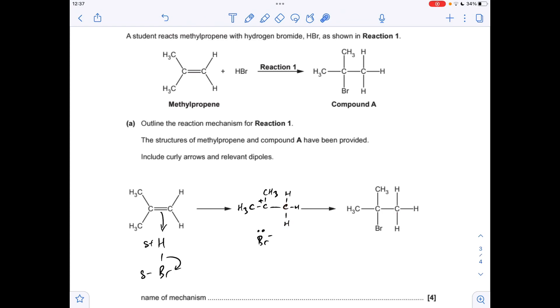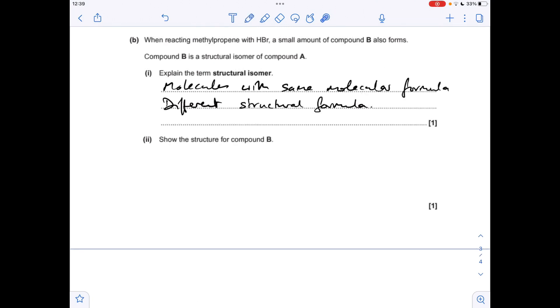So the Br becomes Br minus. To finish the mechanism off, we just need to take a pair of electrons from that lone pair on the Br minus to the carbon with the positive charge. Obviously it forms that covalent bond there. Name of the mechanism is electrophilic addition.